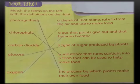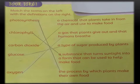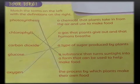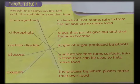Number 1: Photosynthesis is the process by which plants make their own food. Number 2: Chlorophyll is a substance that turns sunlight into a form that can be used to help make food. Number 3: Carbon dioxide is a gas that plants take in from the air and use to make food. Number 4: Glucose is a type of sugar produced by plants. Number 5: Oxygen is a gas that plants give out and that humans breathe.